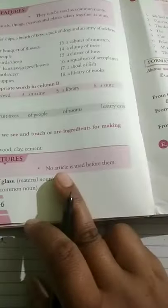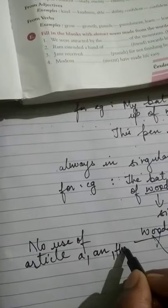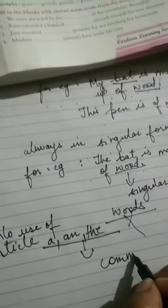The second feature is that no article is used before material nouns. That means no 'a', 'the', or 'an' is used before a material noun. Remember, if we use these three articles in front of a material noun, then that noun will be considered a common noun instead.